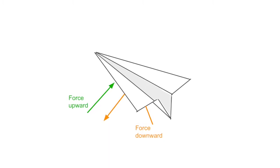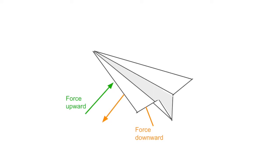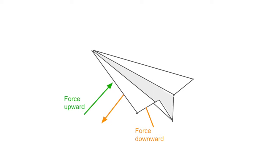Air hits the wings and is deflected downward. This downward force will result in an equal force in the upward direction, pushing the plane upward.